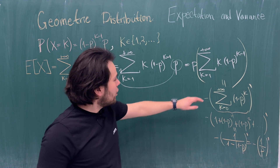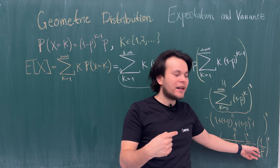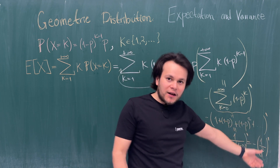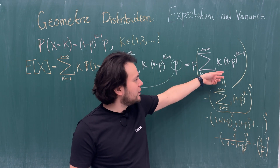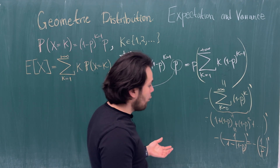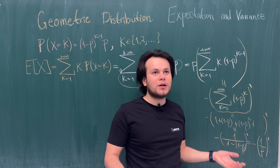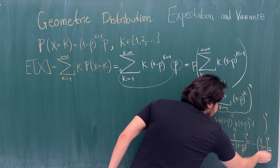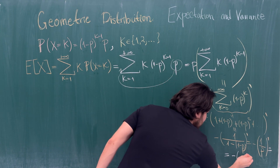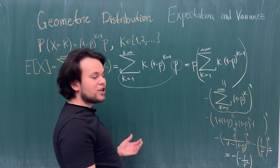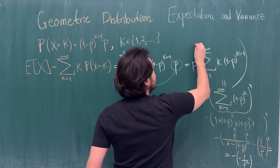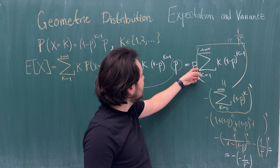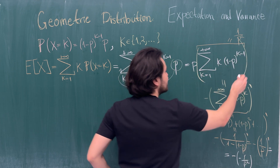The derivative of 1/p with respect to p is -1/p². So we have minus · (-1/p²) = 1/p². Therefore the sum from k=1 to infinity of k · (1-p)^(k-1) = 1/p². Multiplying back by p, the expected value E[X] = p · (1/p²) = 1/p.